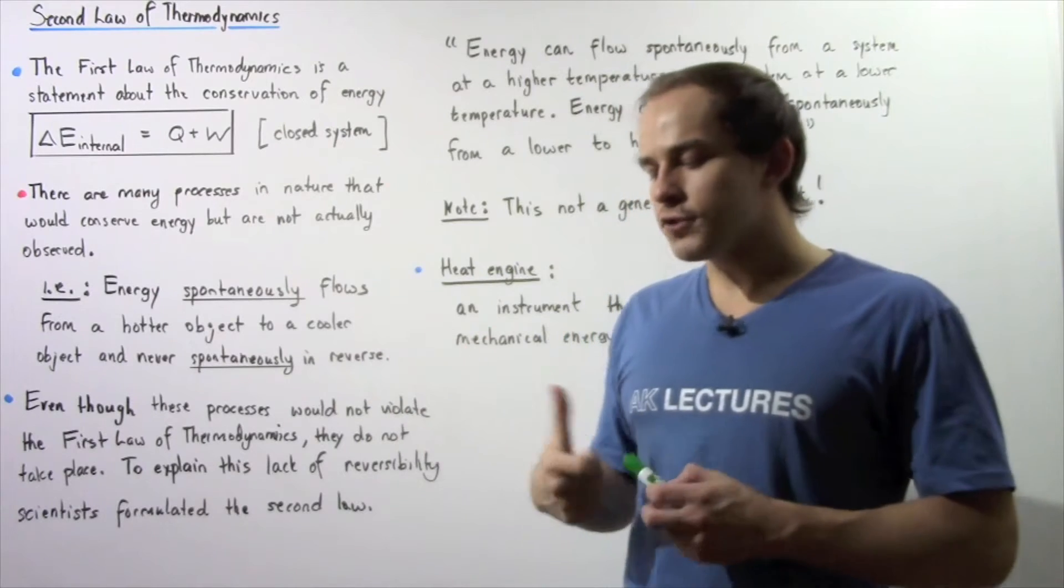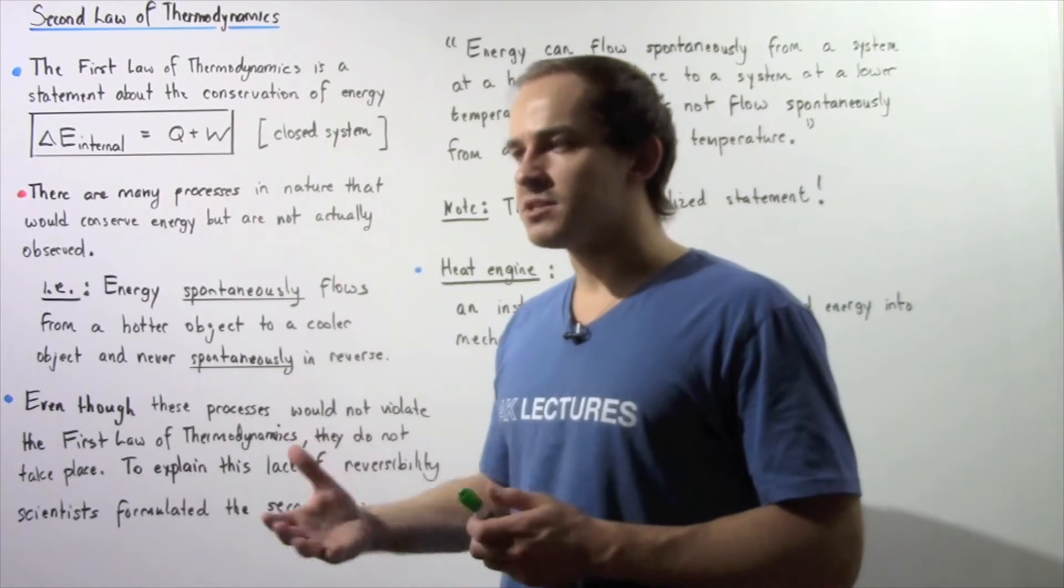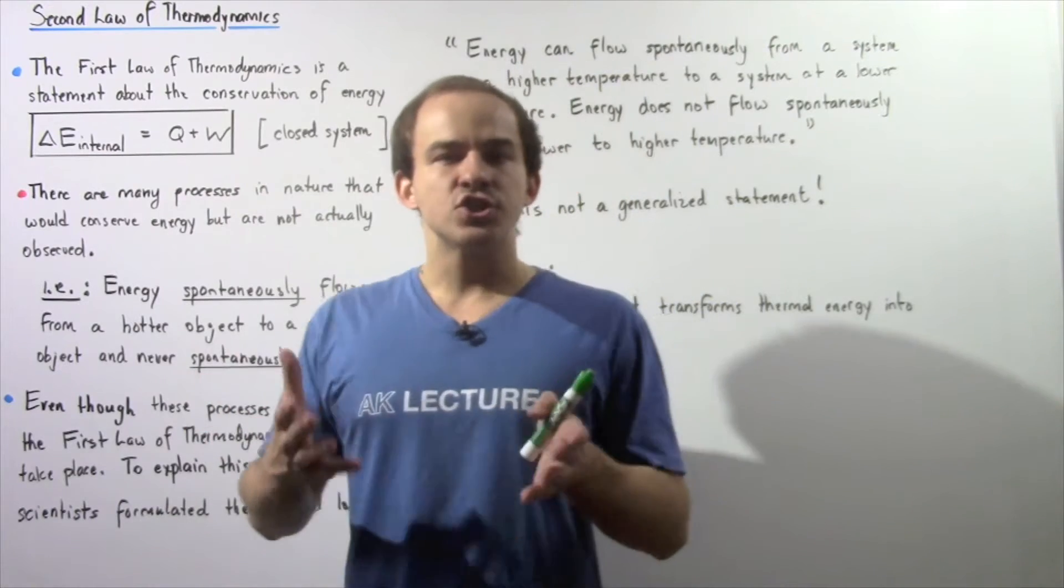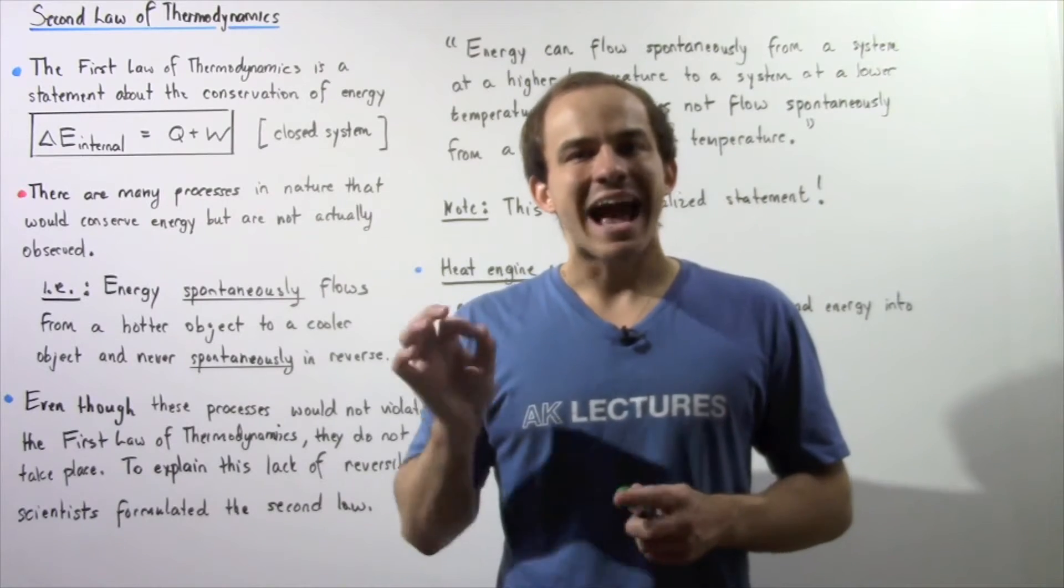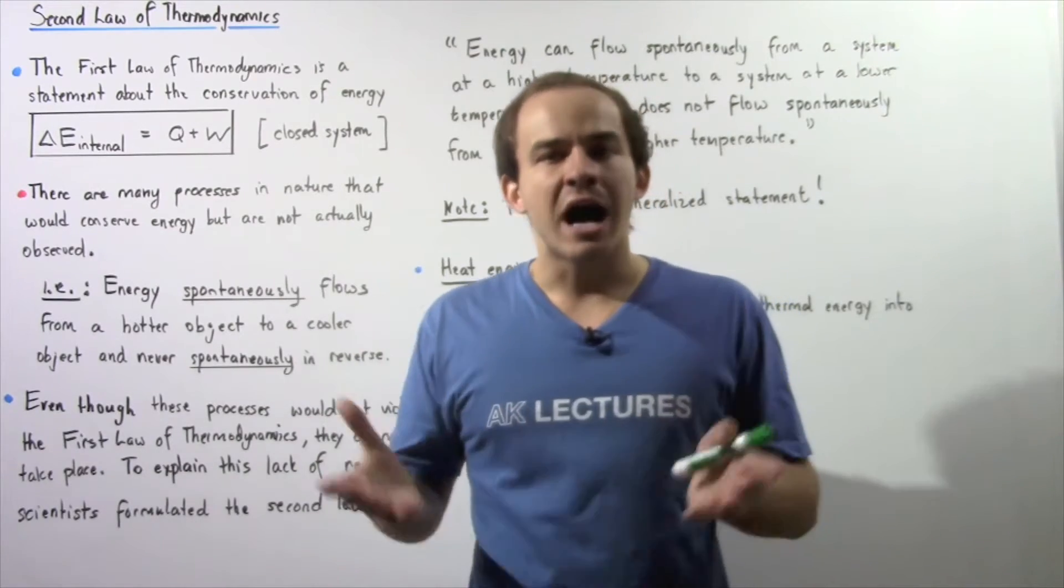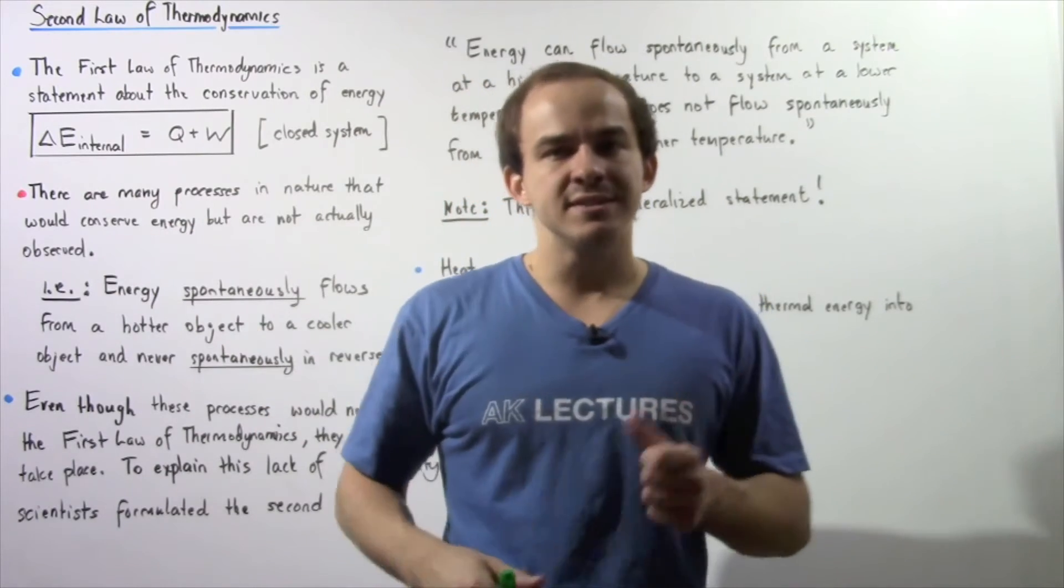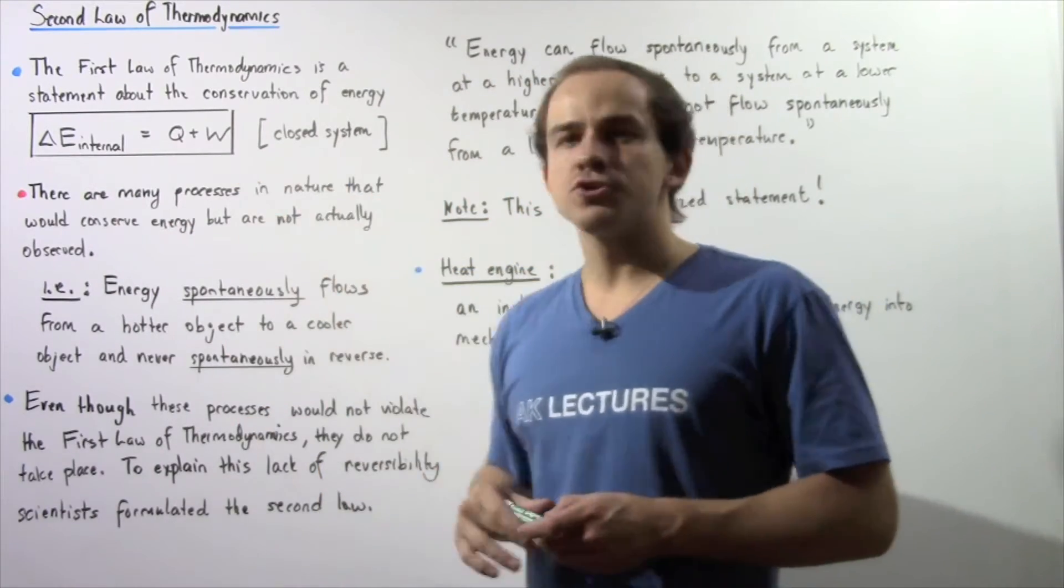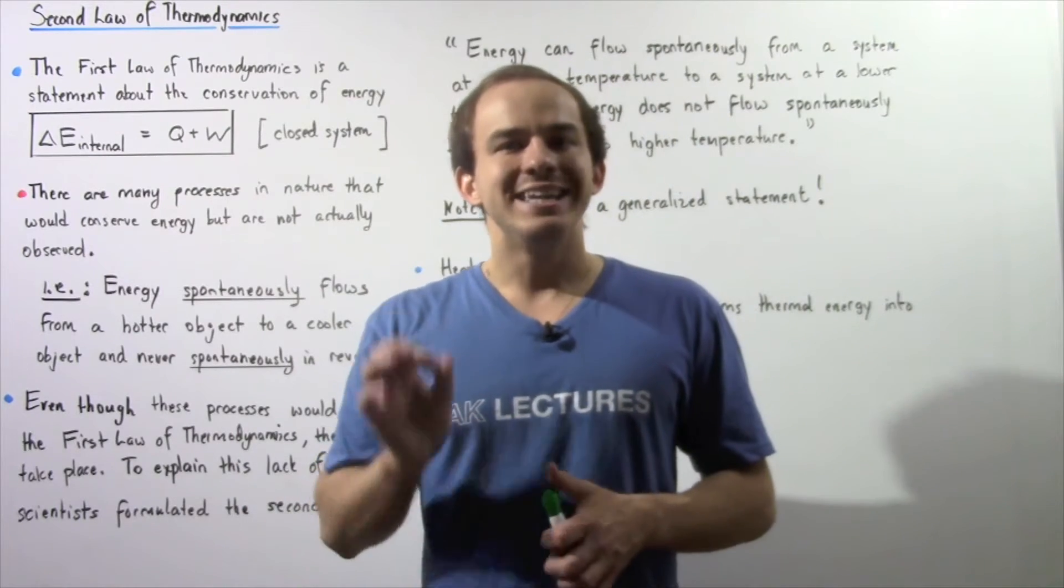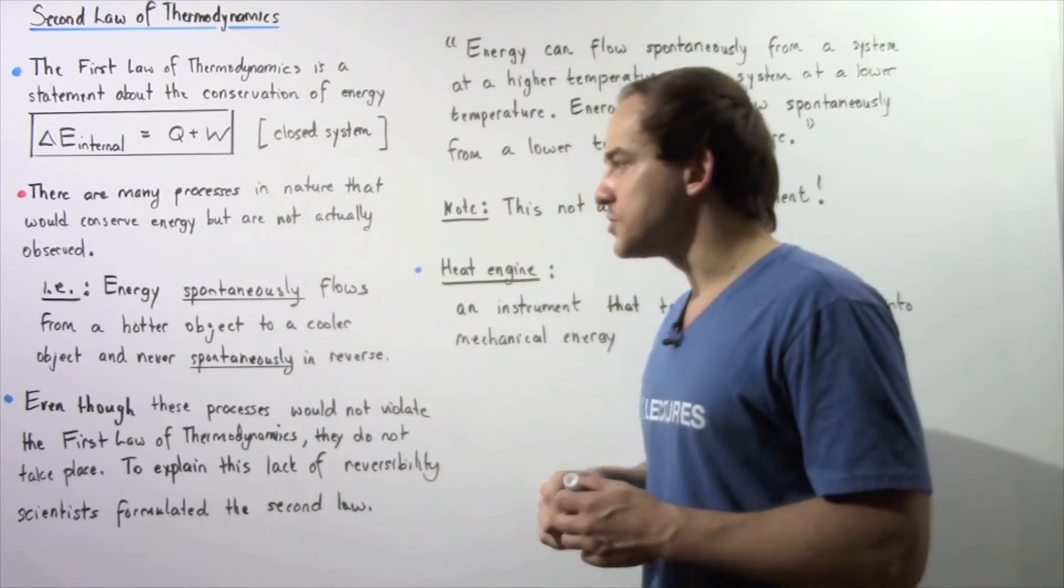So the first law of thermodynamics is a very useful law because it helps us describe the way that certain processes take place in nature. However, it doesn't actually describe the entire picture. And that's because there are many processes in nature that readily obey the first law of thermodynamics yet do not actually take place. So let's look at two different examples.